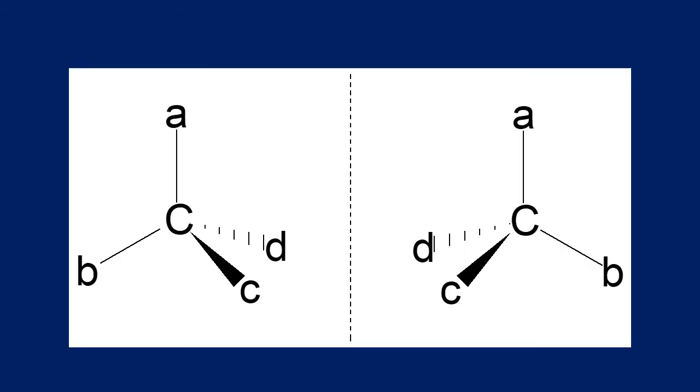So we can often be asked to draw these enantiomers. Now, there's always going to be four groups because it has to be a chiral carbon. Therefore, the carbon is always going to be tetrahedral. So what we need to get comfortable with is drawing these tetrahedrals and drawing the mirror image of the tetrahedral. So here we can see two tetrahedrals. They're both mirror images of each other. That line in the middle would be a mirror, and you can see they are reflected.